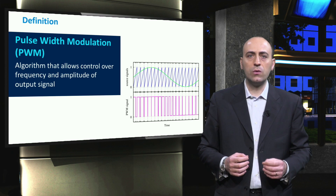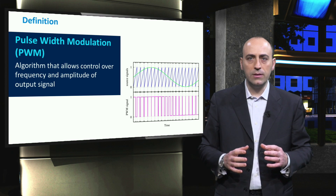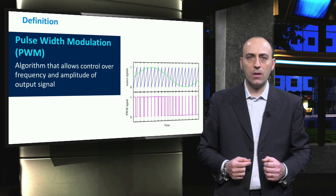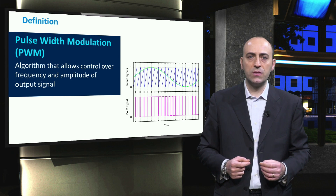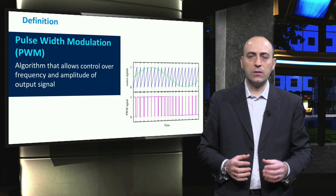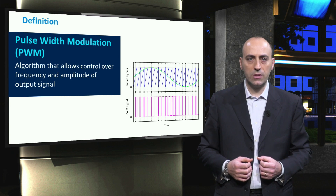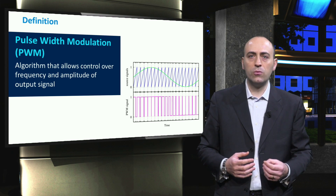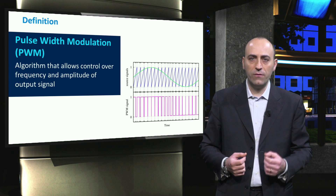Pulse Width Modulation is a control technique that acts over the switches of the inverter. It has the aim of controlling both the frequency and the amplitude of the output signal. This control is performed by modulating on and off times of the switches, therefore the Pulse Width. Apart from power electronics, PWM is also widely used in digital electronics and signal processing. This technique basically enables the inverter to output a periodic signal towards the AC side of the PV system, once opportunistically filtered out.